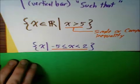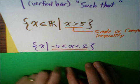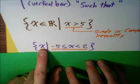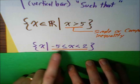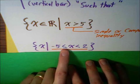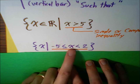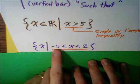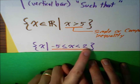Here's another one. Let's see if you can pronounce this. The set of all values x, such that x is greater than or equal to negative 5, and x is less than 2. And again, you can pronounce this several different ways.